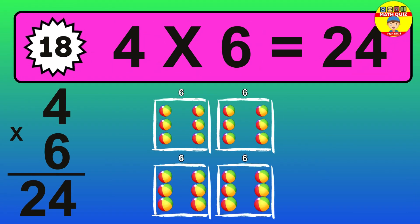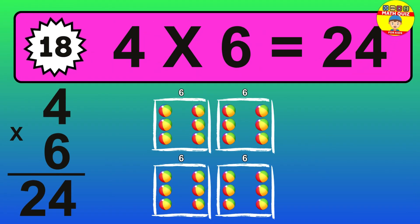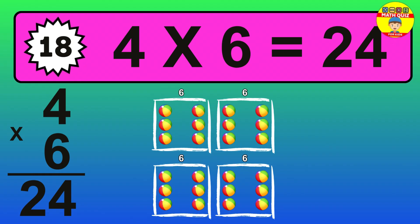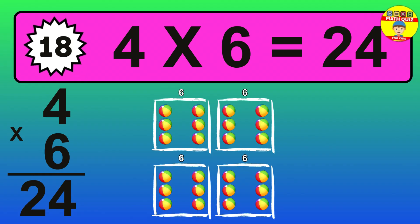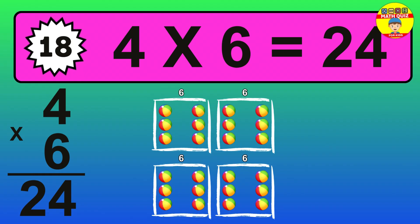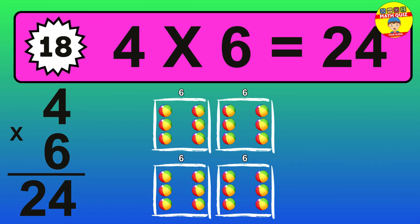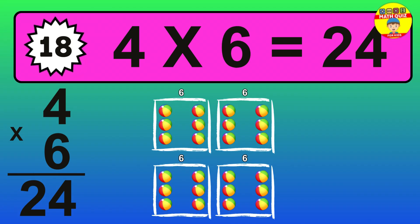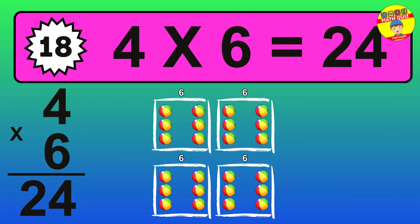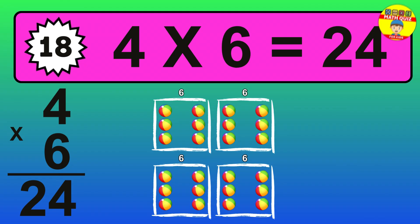The answer is 4 times 6 is 24. To calculate, we have 4 groups with 6 balls each one. So, how many balls do we have? 24 balls.